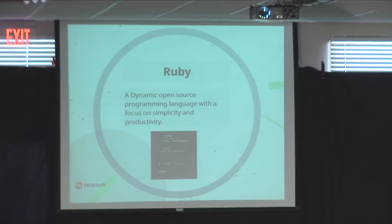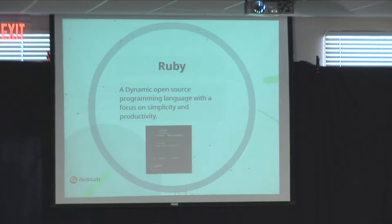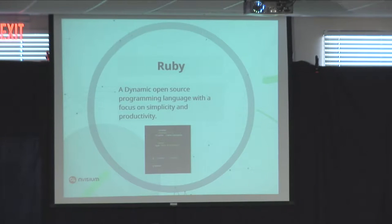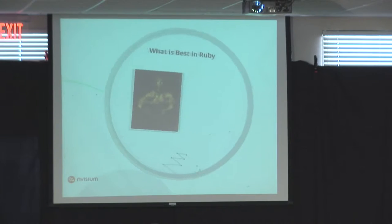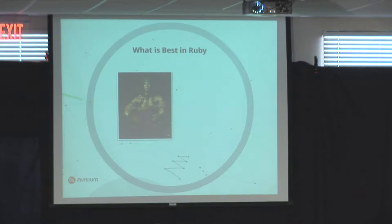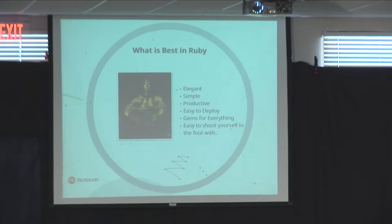What is Ruby? It's a dynamic open source language with a focus on simplicity and productivity. You can see the greeter class here — a simple way to say hello to the world. What's best in Ruby? It's elegant, simple, not bound by a lot of constraints from larger frameworks. It's easy to deploy, productive, and there are gems for pretty much everything. But it's also very easy to shoot yourself in the foot with — the same things that make Ruby great can cause intense problems.